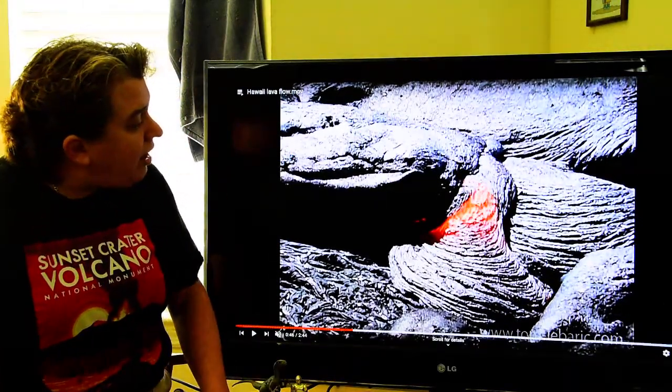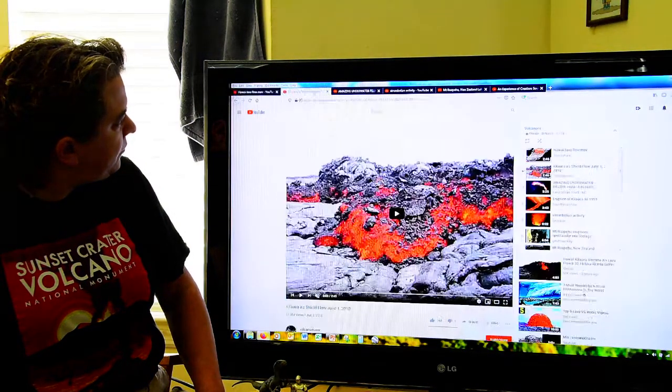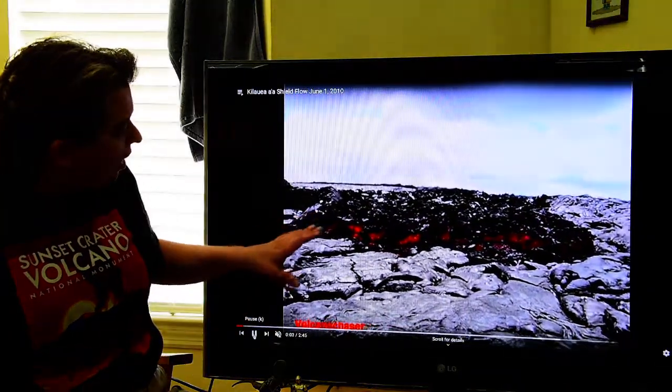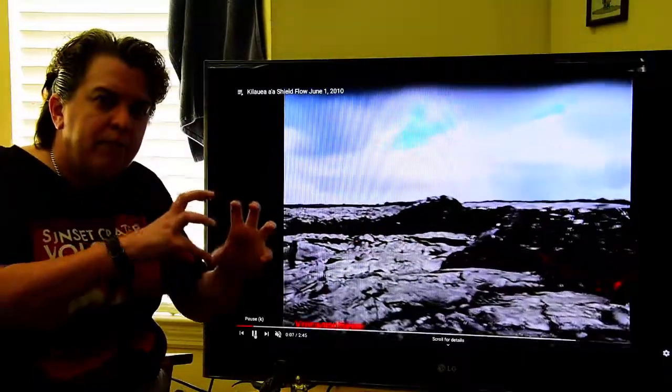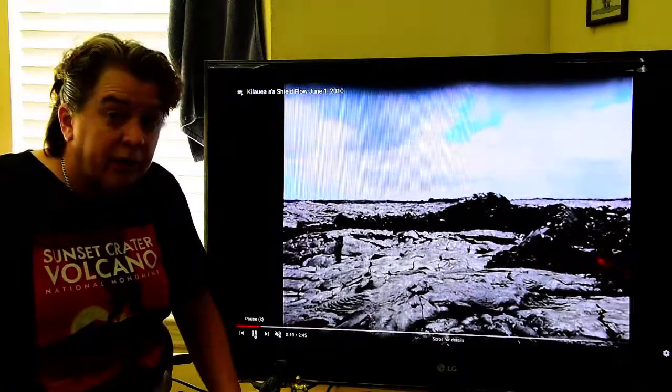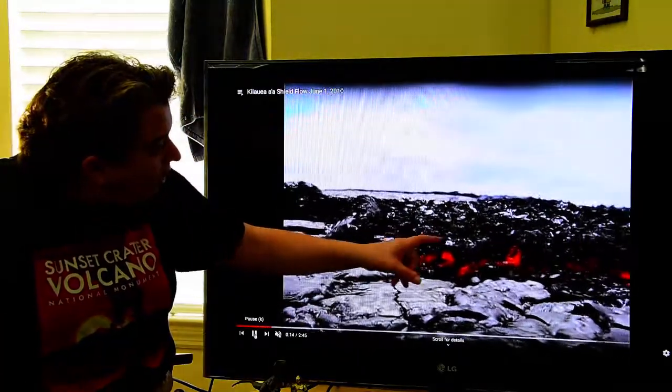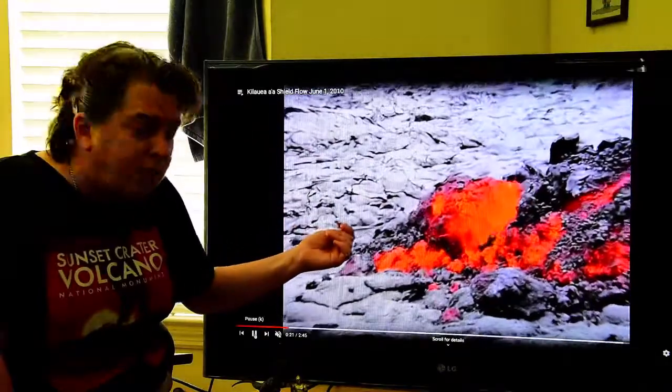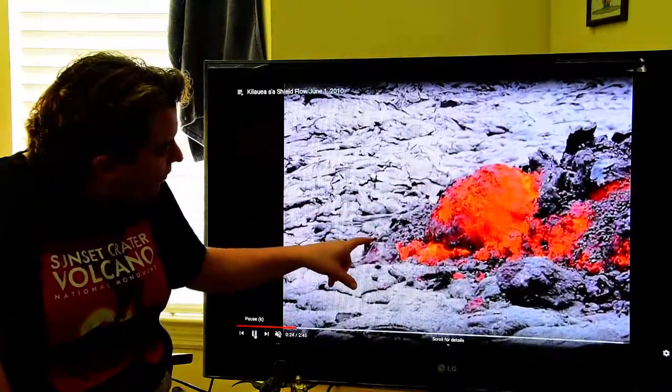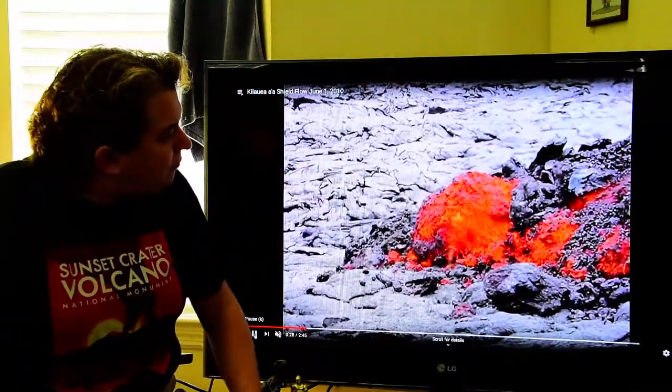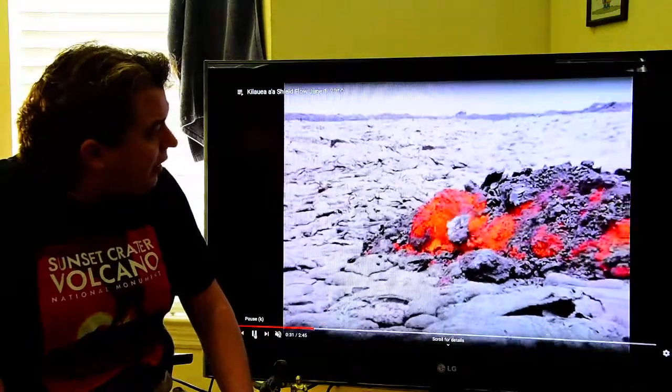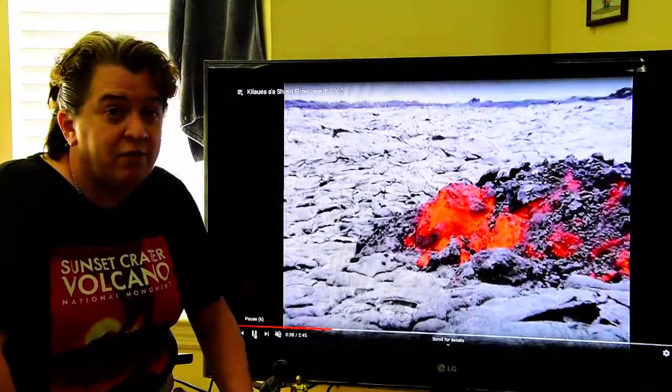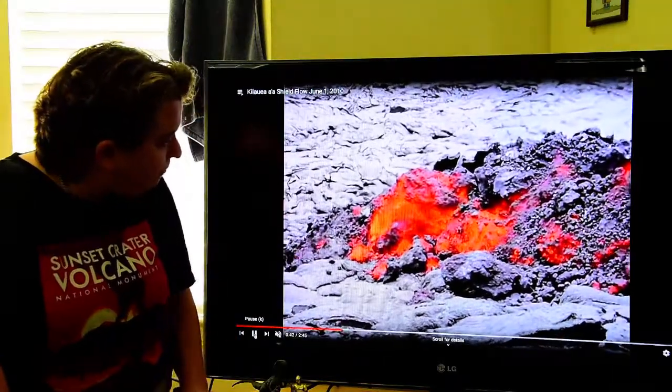So let's take a look then at a-a. Again, we're going to be in Hawaii looking at this a-a flow. Notice that reddish middle. That's where it's still liquid, and it's flowing very slowly. But as it cools and contracts, gets smaller, these pieces start breaking off it. And as these pieces start breaking off, you're left with that very rubbly, jagged surface to the a-a flow. I don't know about you guys, but I love watching lava flows. I could just, if I have a bad day, I could watch hours of this and just be happy. There a piece fell off.